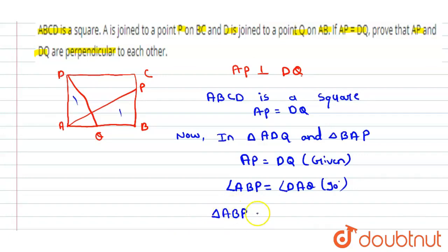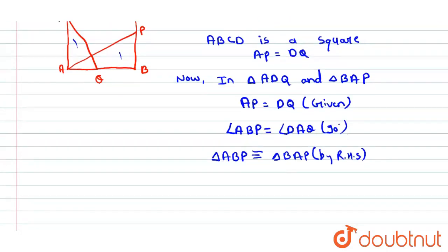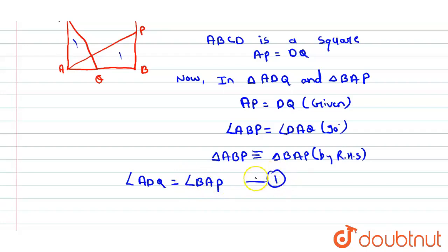We can say that triangle ABP is congruent to triangle DAQ by RHS congruence. Therefore, since the two triangles are congruent, we can say that angle ABQ is equal to angle BAP. This is our first equation.